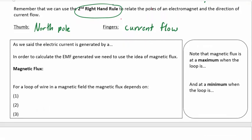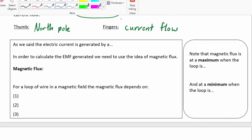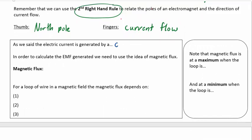So as we said, electric current is generated by a changing magnetic field. But when we talk about magnetic field, to get a clearer picture, we really actually need to talk about something called magnetic flux.